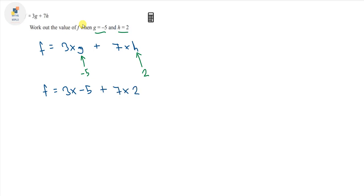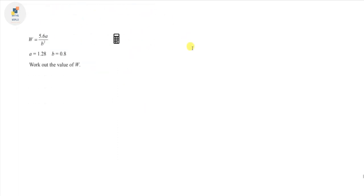We've got F equals 3 times minus 5 plus 7 times 2. Three times minus 5 is minus 15, and seven times 2 is 14. So we want to work out minus 15 plus 14, which is equal to minus 1. Actually, no calculator was required, but if you needed to use it, that's how you would do it.